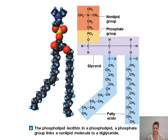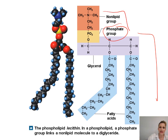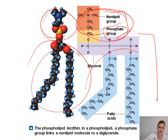Here you can see the structure of a phospholipid. It has a phosphate group and a lipid group — hence the term phospholipid. This head region up here likes water, so this is the region that's hydrophilic. And then this whole tail region is fatty acid, the lipid area, so that part is hydrophobic.